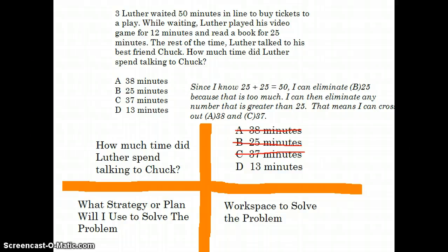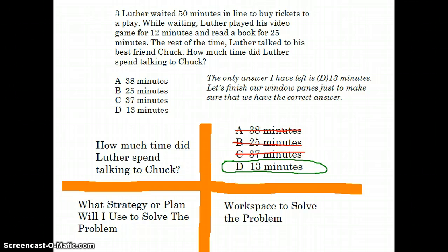So B can be eliminated because we know that it can't be 25 minutes, that's too much time. So since 25 minutes can be eliminated, we know that A, 38 minutes can be eliminated, and also C, 37 minutes can be eliminated as well. Our answer choice is D, 13 minutes, but we want to keep working out the problem just to make sure that our answer selection is correct, kind of like a check.